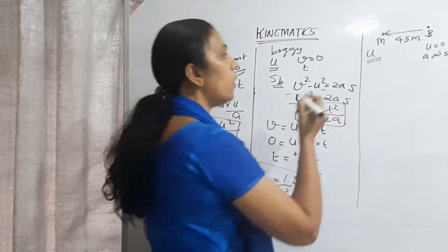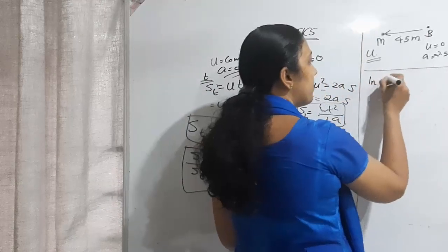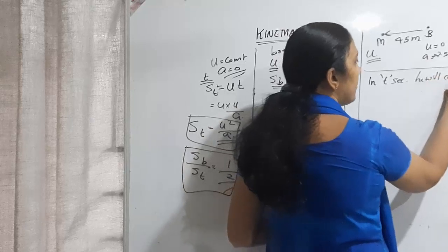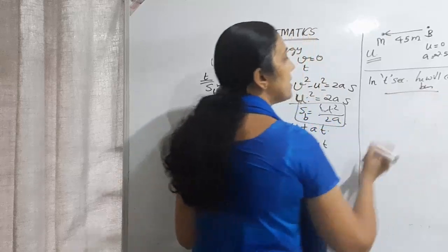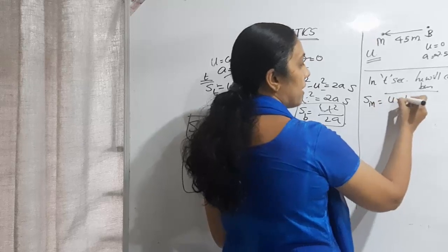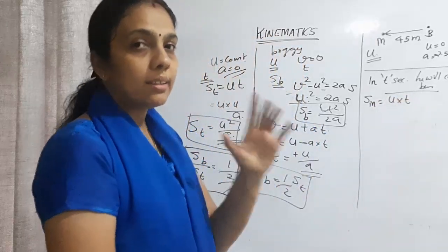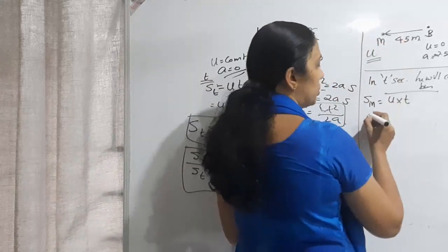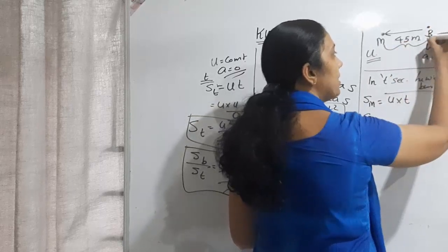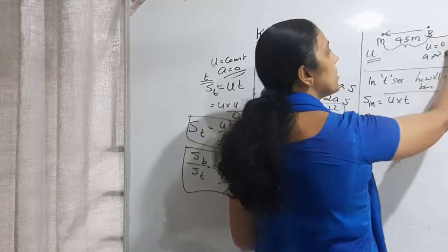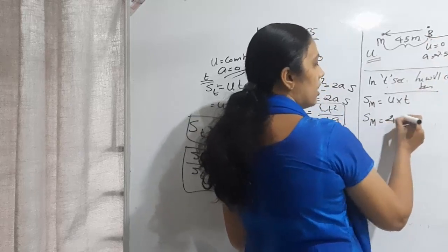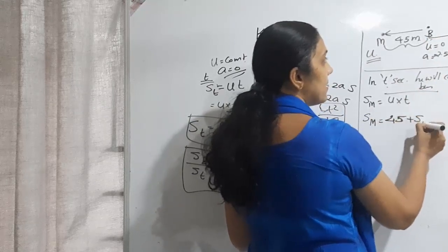We are assuming that in t seconds he will catch the bus. Since we want minimum velocity, we consider the man moving at constant velocity u. The distance covered by the man is u·t. This must equal 45 meters plus the distance covered by the bus during time t. During t seconds the bus, starting from rest, covers half·a·t².